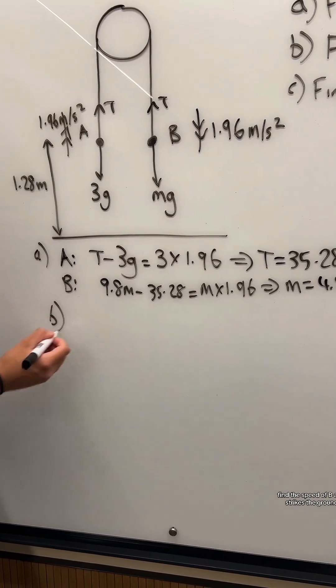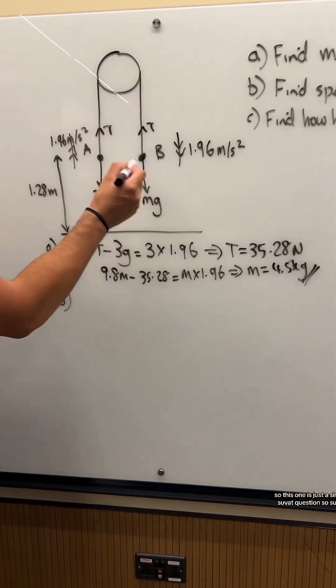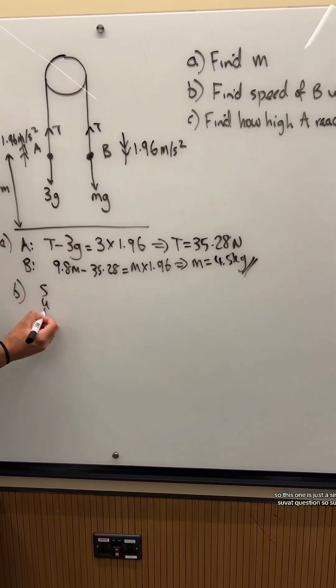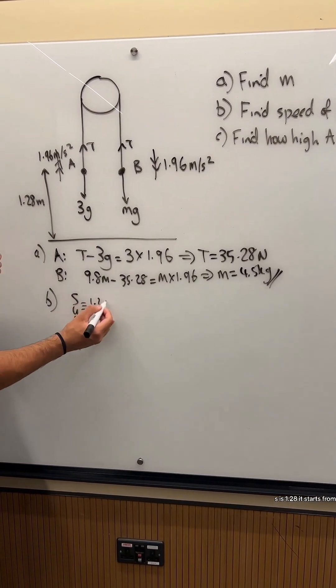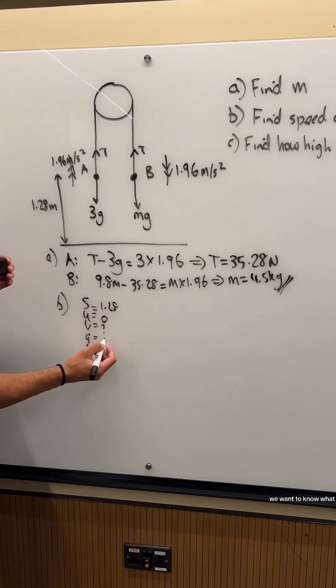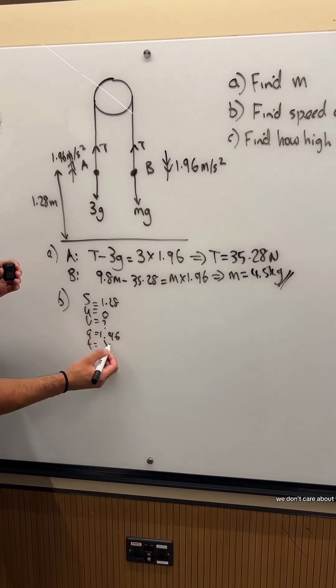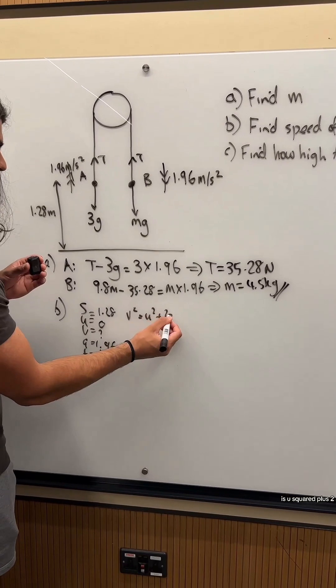Part B: Find the speed of B as it strikes the ground. This is just a simple SUVAT question. S is 1.28, it starts from rest, we want to know V, and A is 1.96. We don't care about T. So V squared equals U squared plus 2AS.